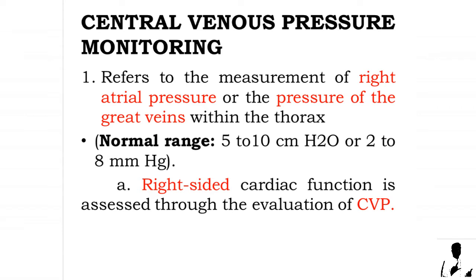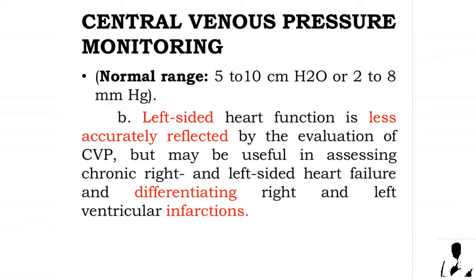Central venous pressure monitoring refers to the measurement of right atrial pressure or the pressure of the great veins within the thorax. Normal range is 5 to 10 centimeters of water or 2 to 8 millimeters of mercury. Right-sided cardiac function is assessed through evaluation of central venous pressure, and left-sided heart function may be useful in assessing chronic right and left-sided heart failure and differentiating right and left ventricular infarctions.